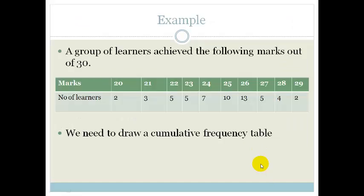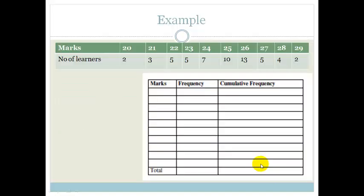So the best way to understand how a cumulative frequency graph works is to do an example. They tell us we've got a group of learners who achieved the following marks out of 30. We've got our marks and a number of learners. Now we need to draw up a cumulative frequency table. So let's do that.